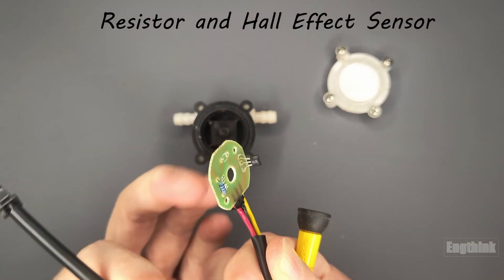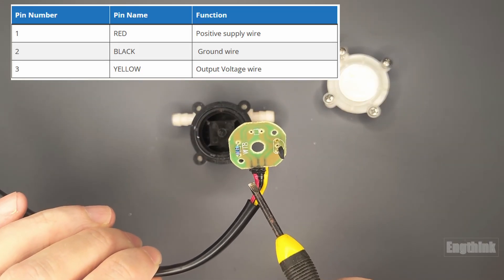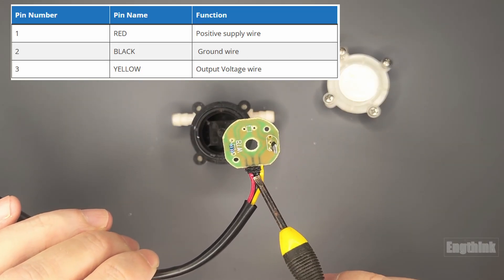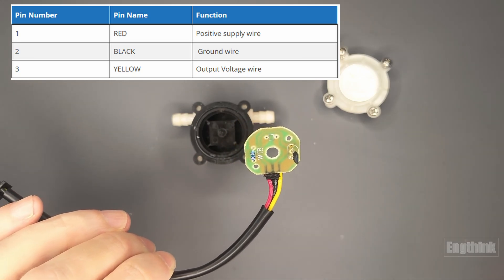Regarding the wire connections, it uses three wires. The red wire is the positive supply wire, the black wire is the ground wire, and the yellow wire is the output pulse voltage of the sensor.